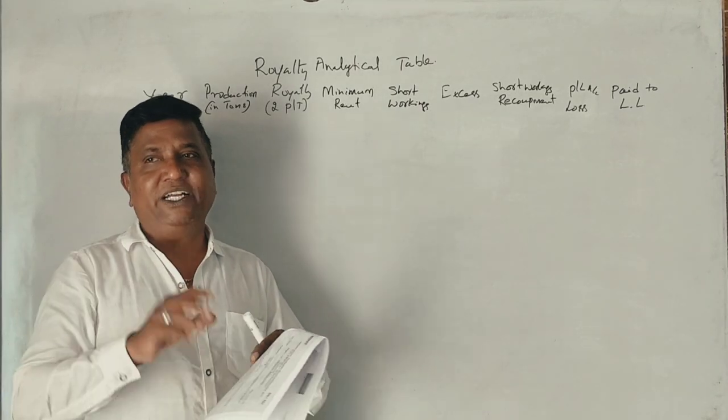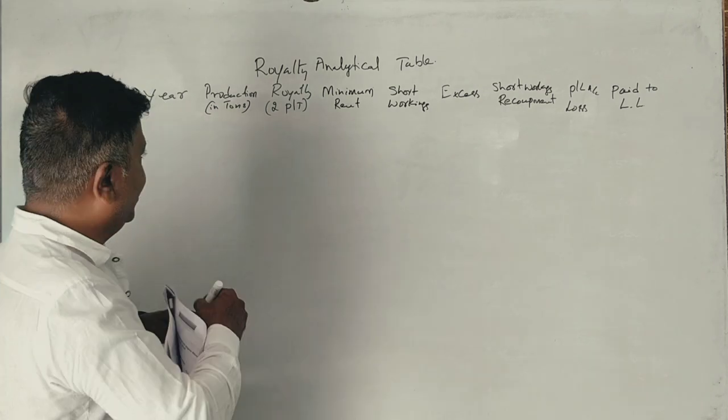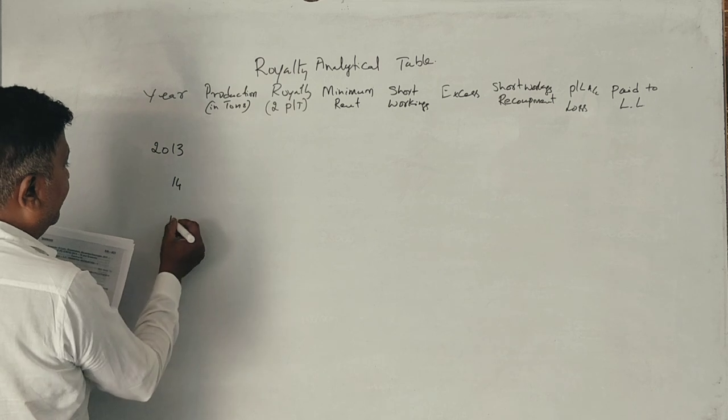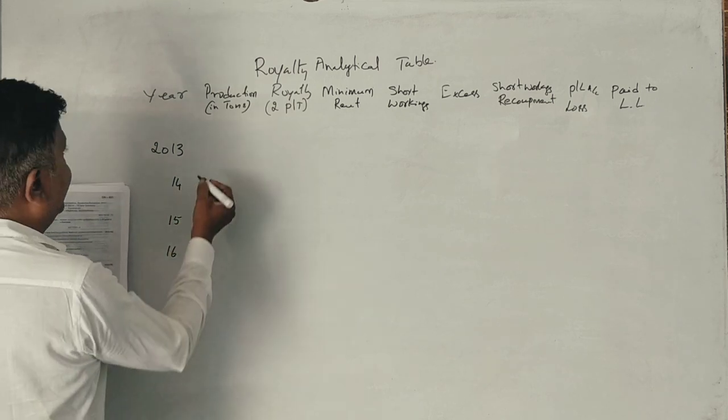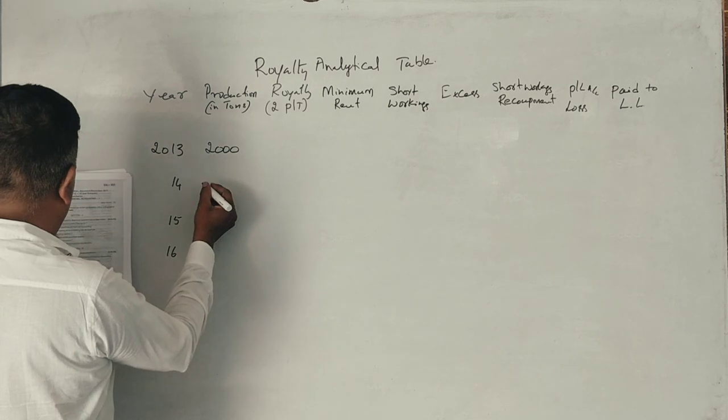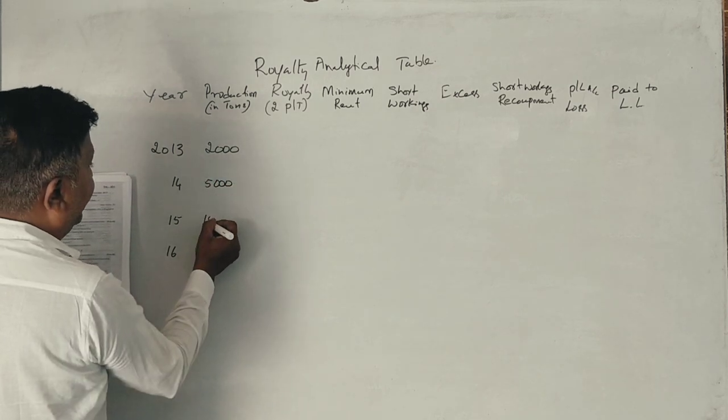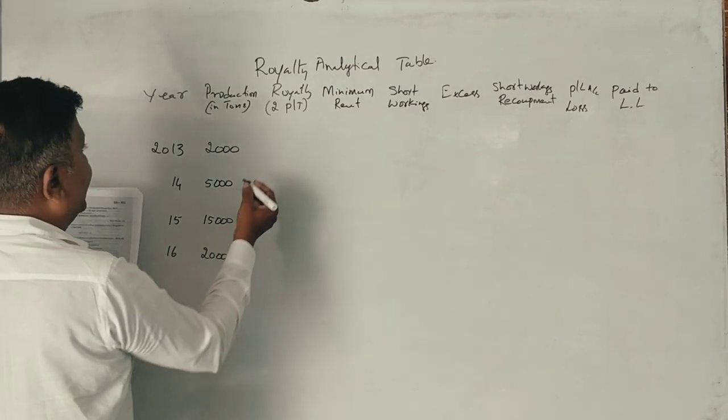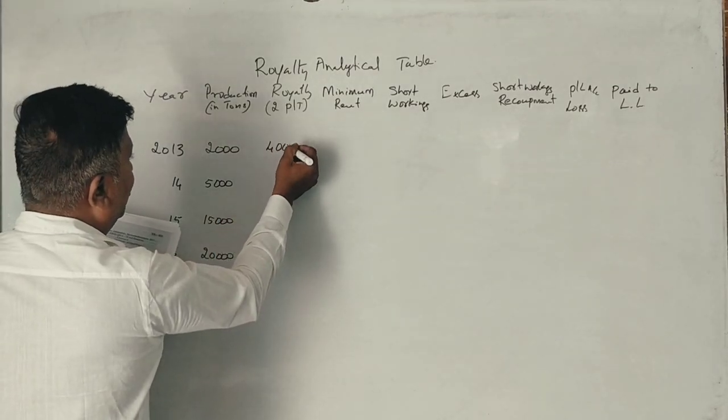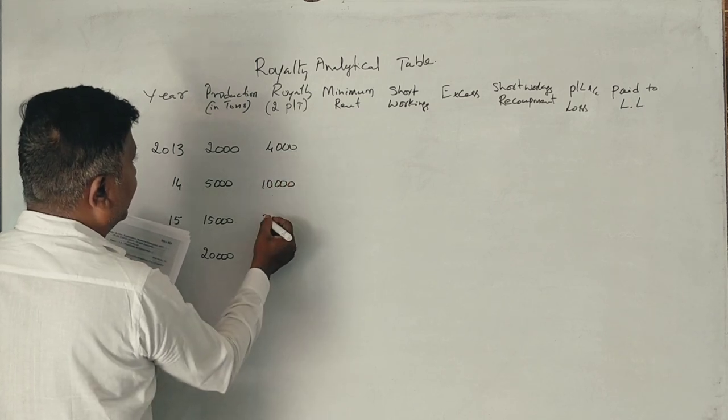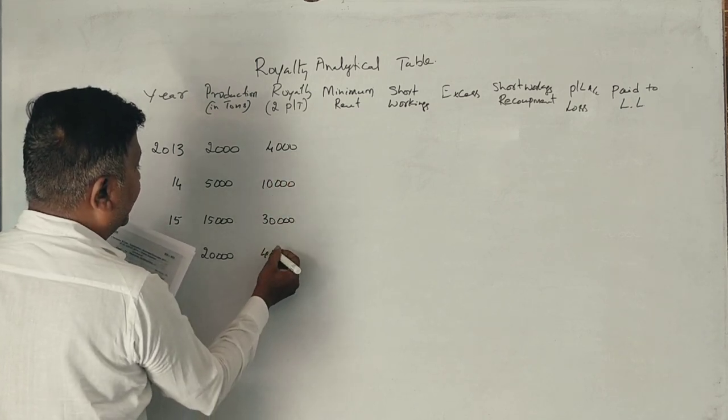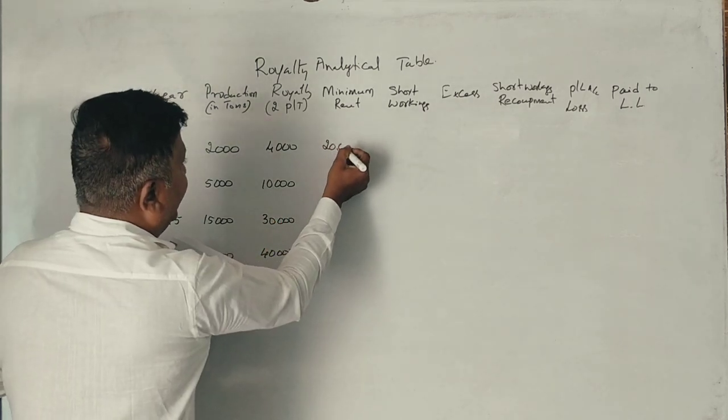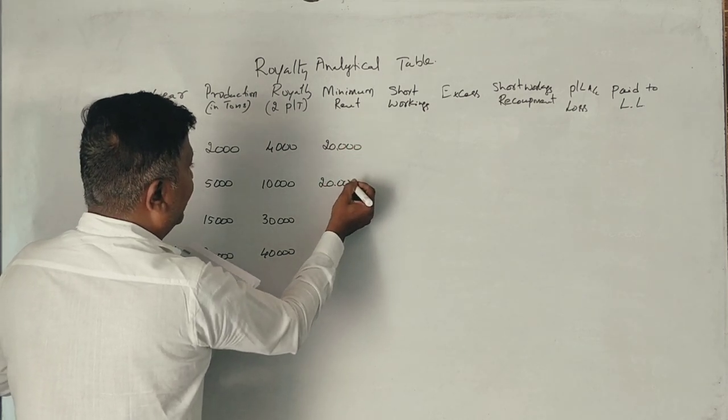Now we'll set up the table with years 2013, 2014, 2015, 2016 and production of 2,000, 5,000, 15,000, and 20,000 tons. The royalty at ₹2 per ton gives us ₹4,000, ₹10,000, ₹30,000, and ₹40,000. The minimum rent is ₹20,000 for each year.